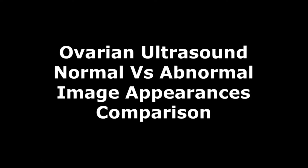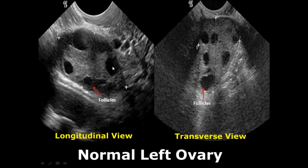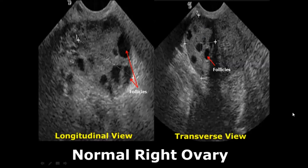Hello everyone, this is Dr. Sam and today we will talk about ovarian pathologies on ultrasound, comparing the normal and abnormal appearances of ovaries. Starting with normal views of the left ovary: in the longitudinal view it is wider with multiple follicles, and in the transverse view it is taller. Similarly, both longitudinal and transverse views of the right ovary show follicles visualized.